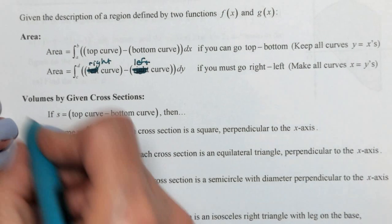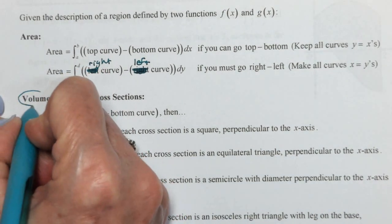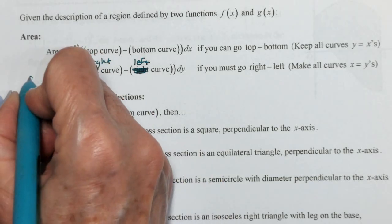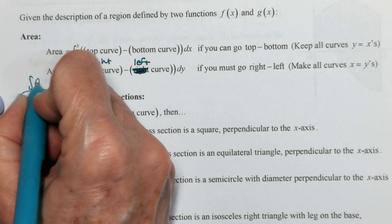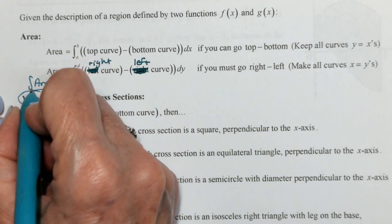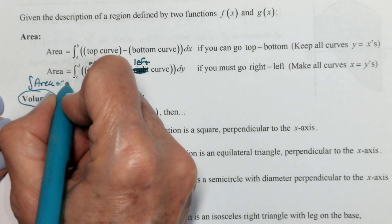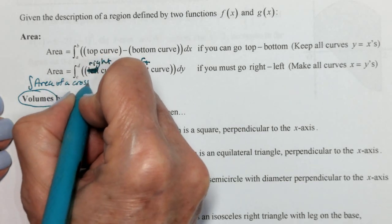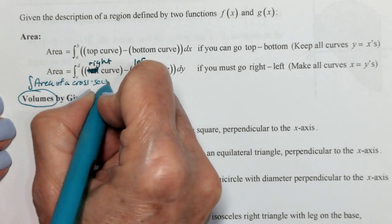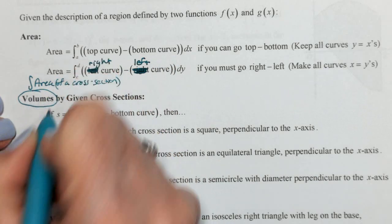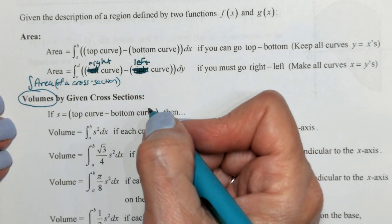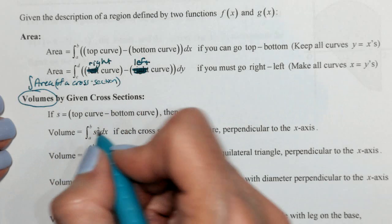Volumes. Whenever you're asked to find volume, you should be thinking: I need to integrate area — specifically, integrate the area of a cross section. Integrate area to get volume.